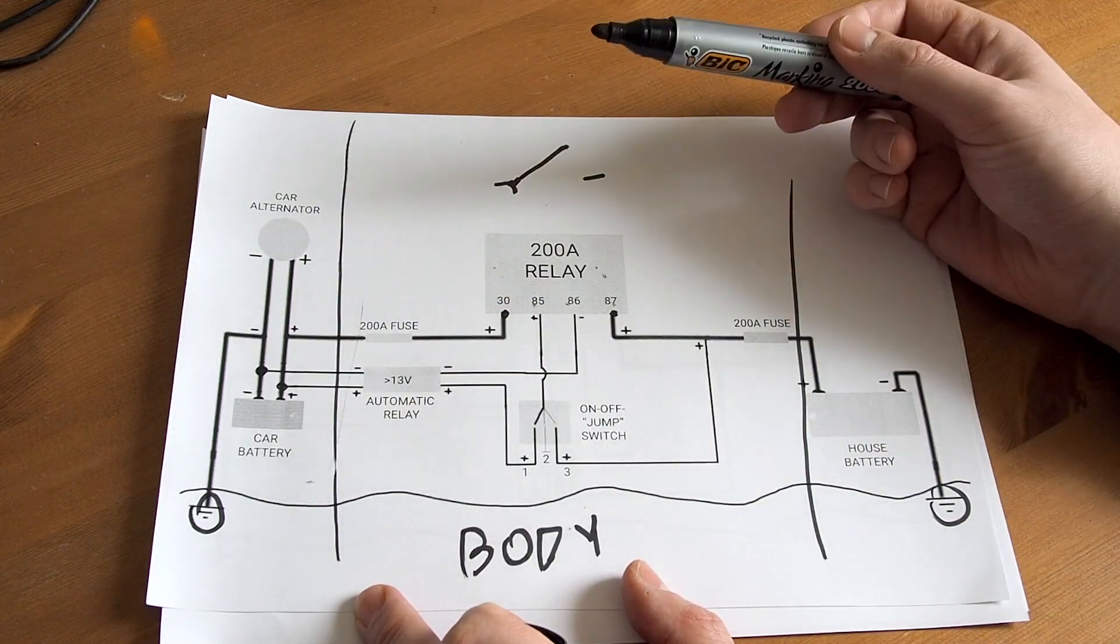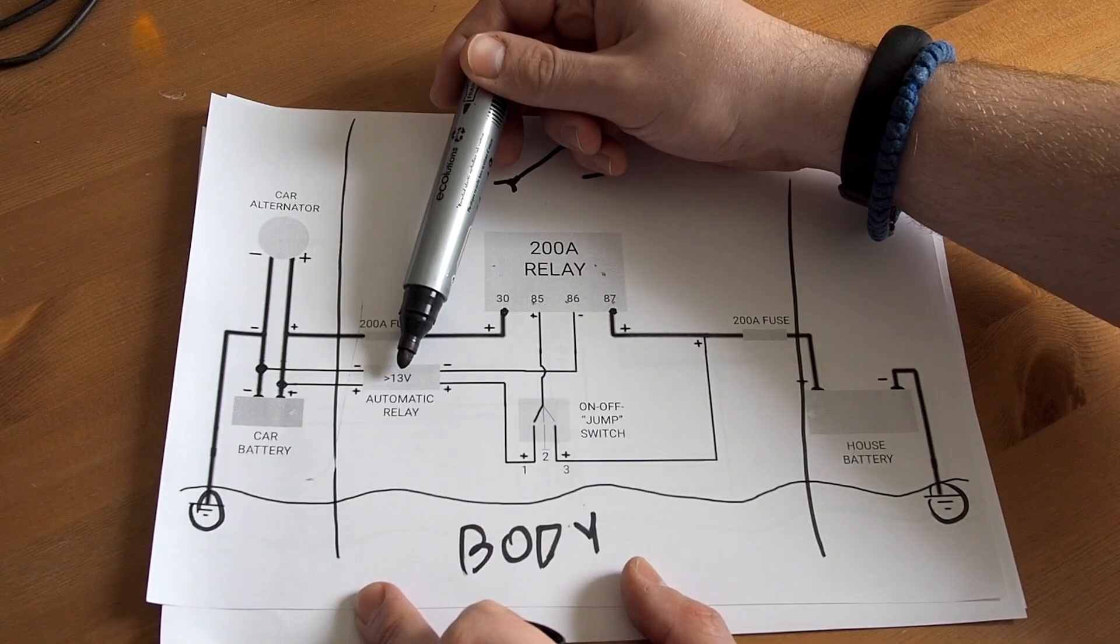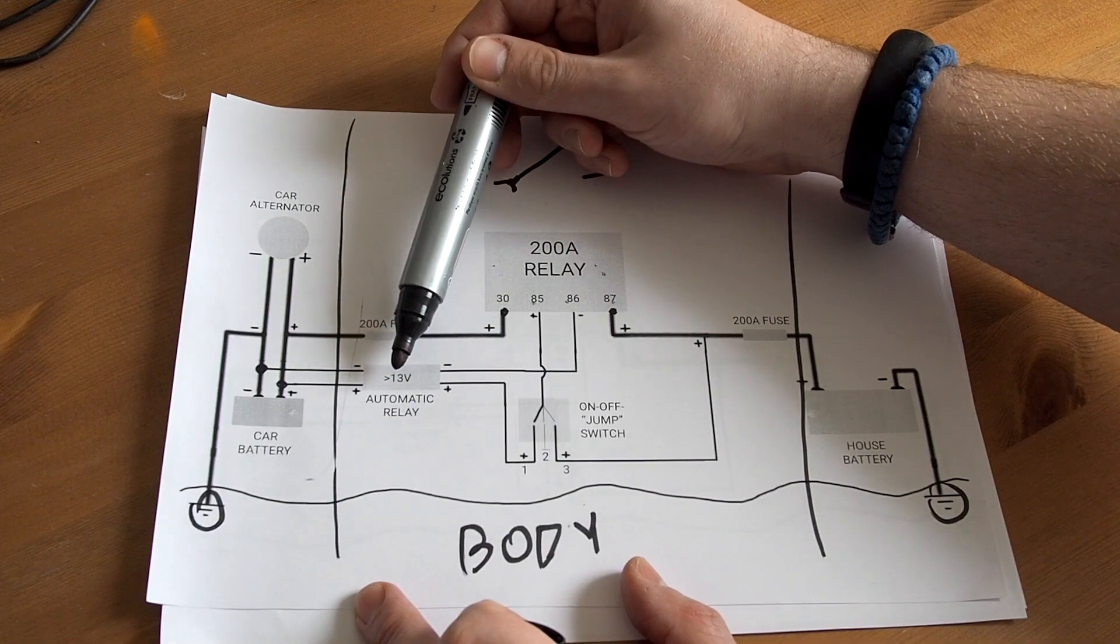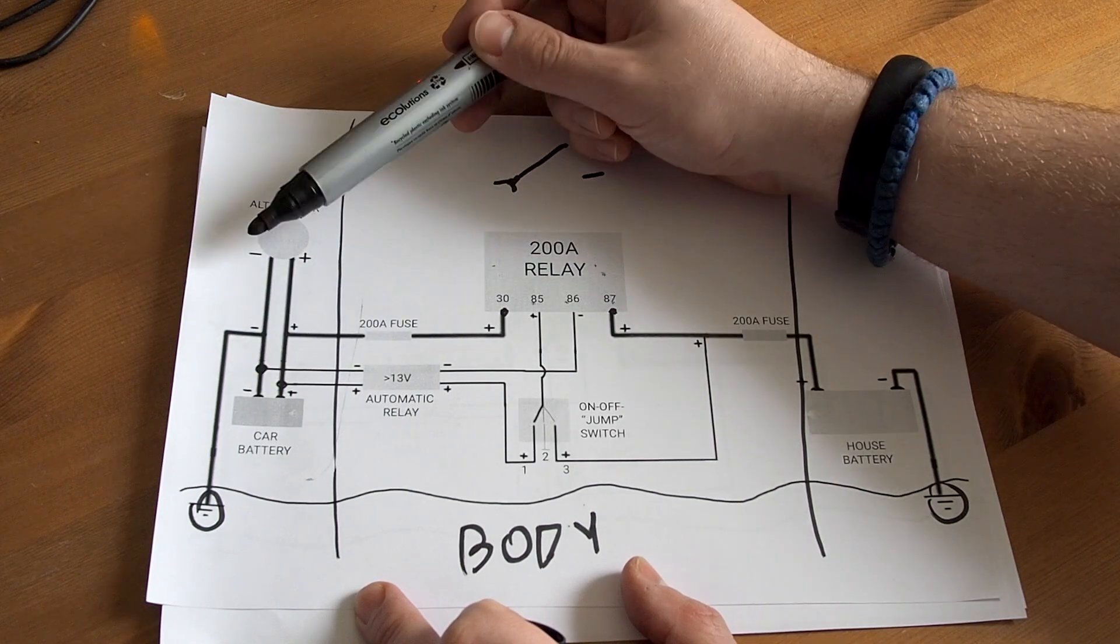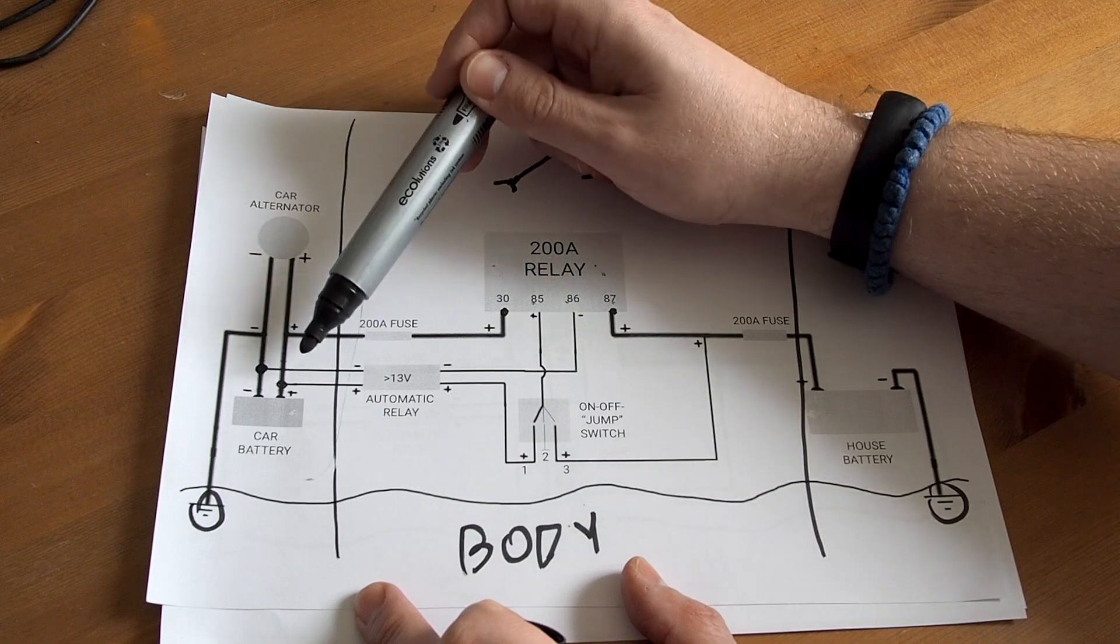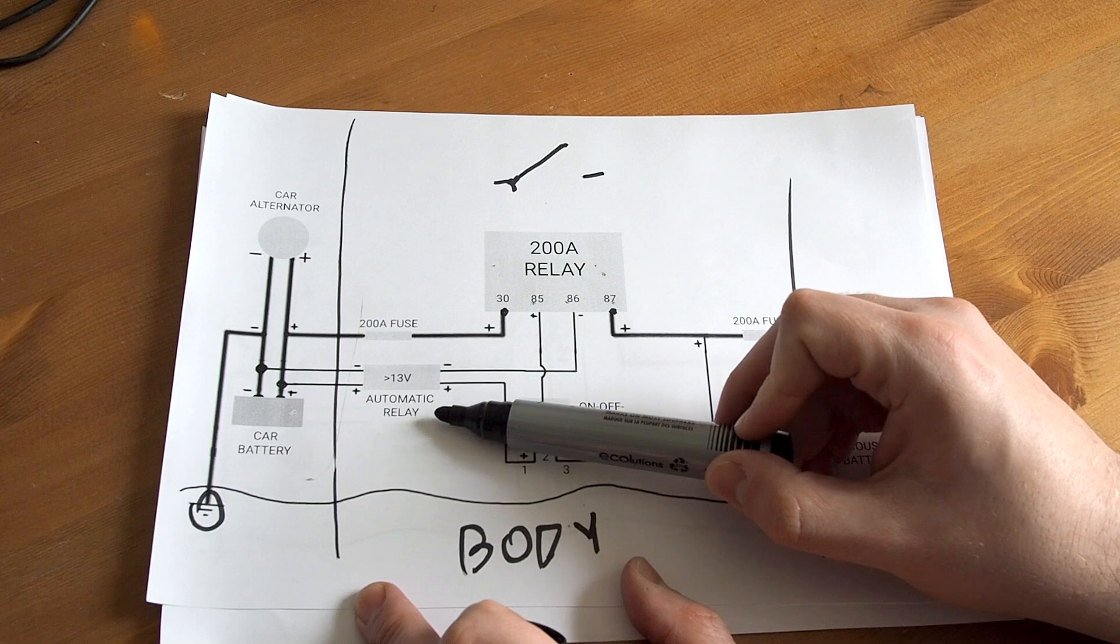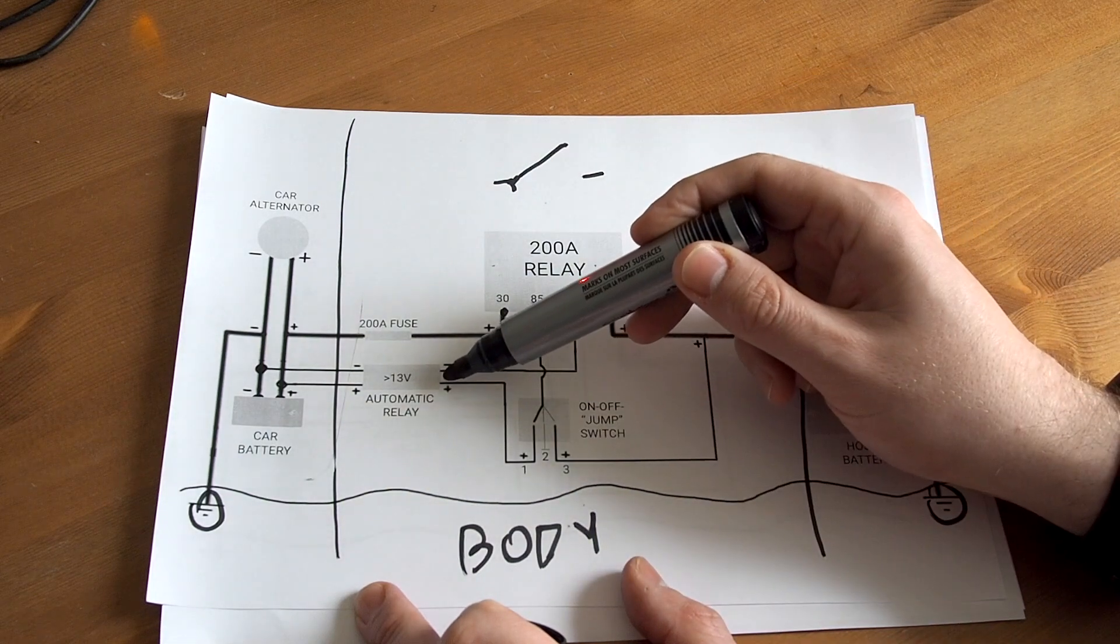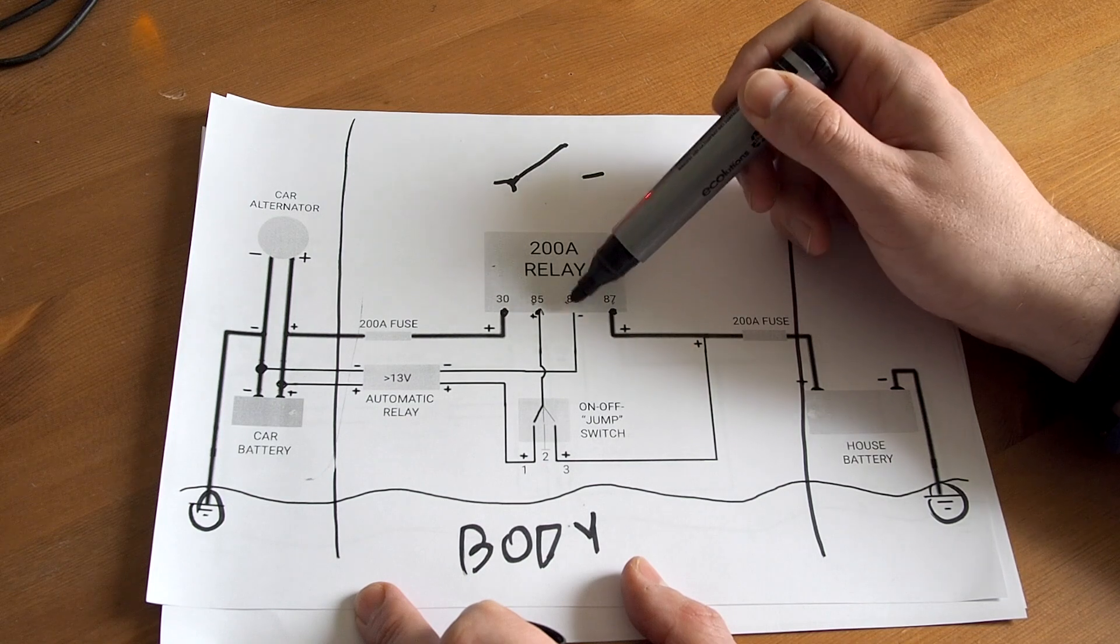So how to make it automatic? For this purpose we have automatic small relay, which monitors the voltage in your car system. So when your engine is running and your car alternator is working, the voltage increases. This automatic relay sees it and makes the power pass through it to the contacts of this relay.